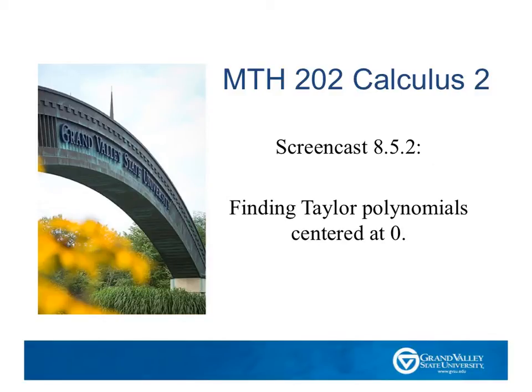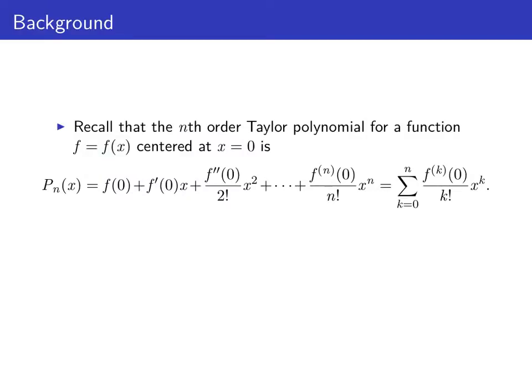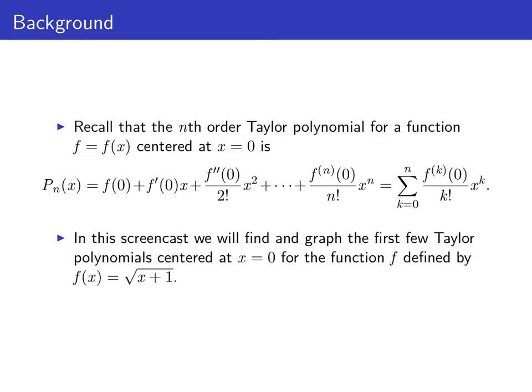Welcome to the GVSU Calculus screencasts. In this video, we're going to consider the problem of finding Taylor polynomials centered at zero. The nth order Taylor polynomial for a function centered at zero is found by taking the function and its derivatives evaluated at zero, dividing by the appropriate factorial, and multiplying by the corresponding power of x. We'll apply this formula to find the first few Taylor polynomials for the function f defined by f(x) = √(x+1) centered at zero.